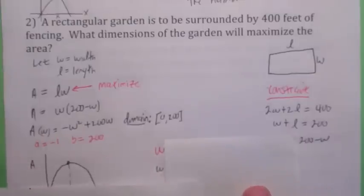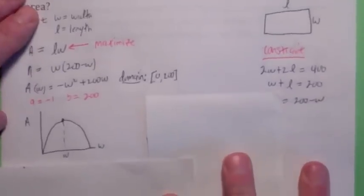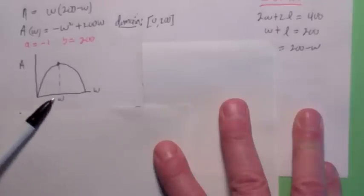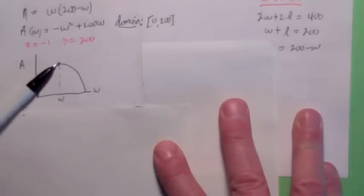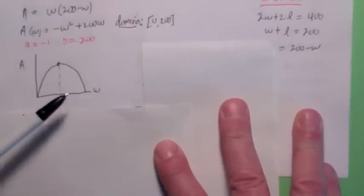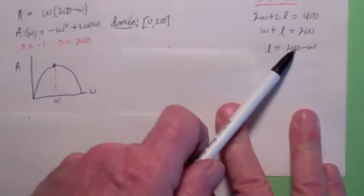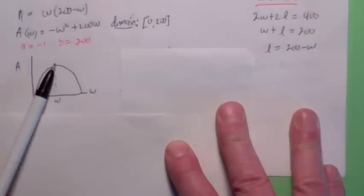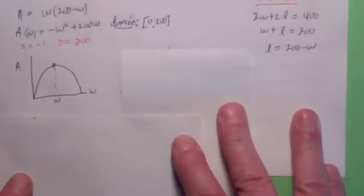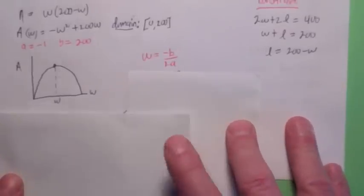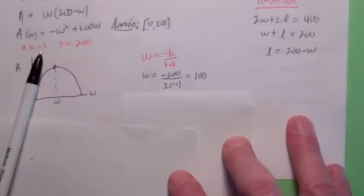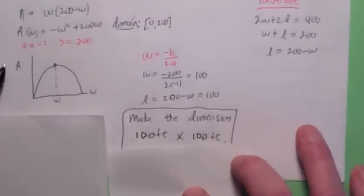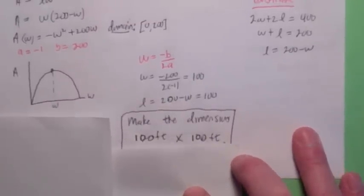We're going to use the vertex here. Let's make sure we understand exactly what's going on. This area function, a of w — if you give it a w, it'll tell you the area for that width. The w coordinate of the vertex is the width that gives the maximum area. Once you find that, the corresponding length would be 200 minus w. It does not ask what the maximum area is; if it did, you'd find the a coordinate of the vertex. The width that gives the maximum area is negative b over 2a, which turns out to be 100. And the length is 200 minus 100, so that's also 100. This is a case where you should make it a square — 100 by 100 gives the maximum area.